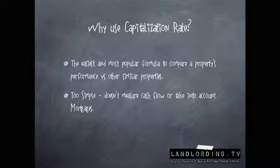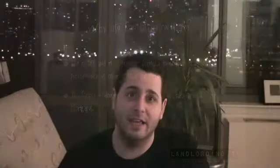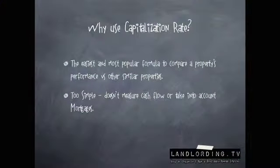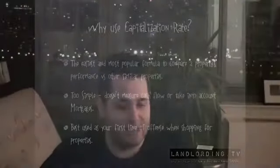One of the problems with it is it's a little too simple. It doesn't measure cash flow because it doesn't take into account any mortgages or debts of that nature — it only takes into account net operating income. So it's very simple, but it is best used as your first line of offense when shopping for properties. If you have a stack of properties you're looking at, run this formula on the numbers and it will give you a quick ballpark of which ones are worth your time and which are not.